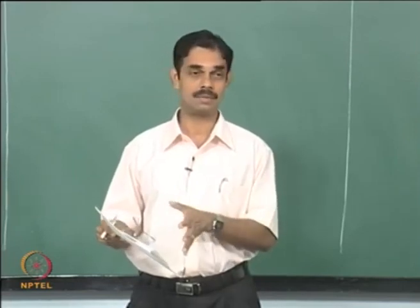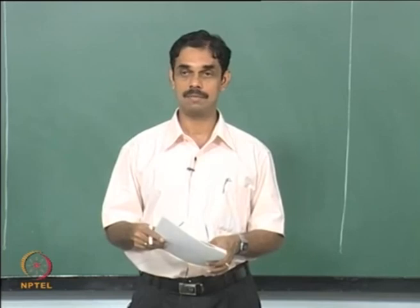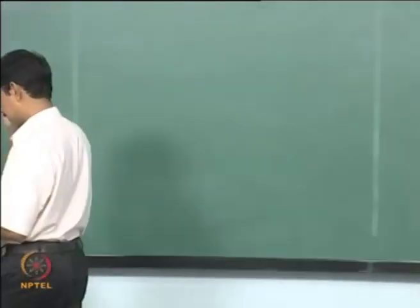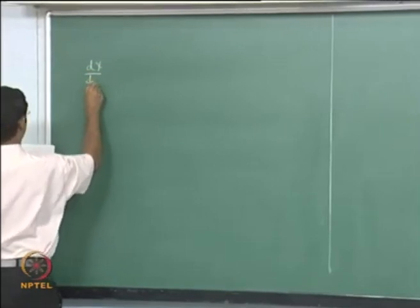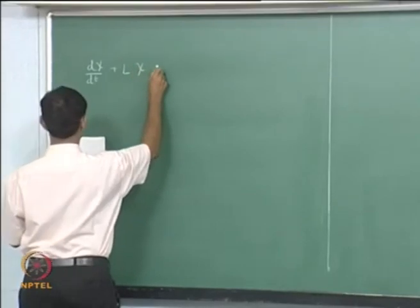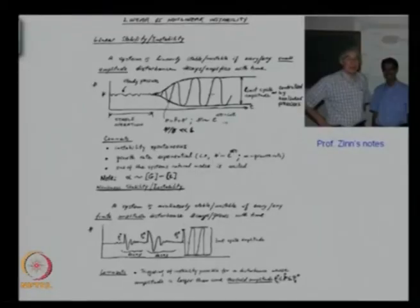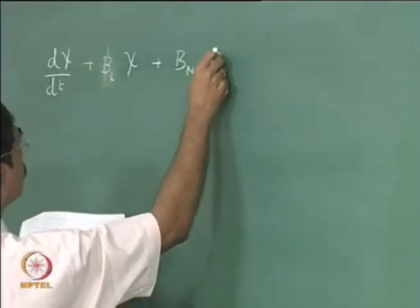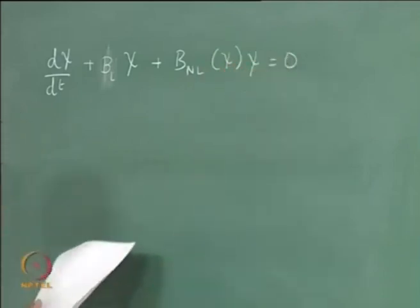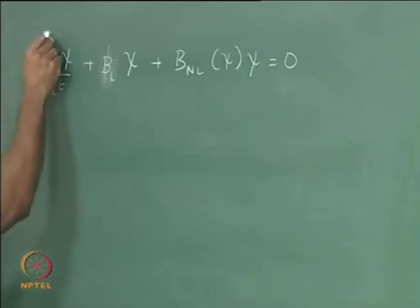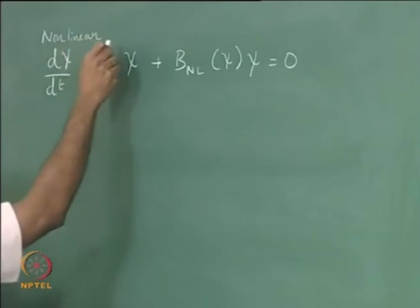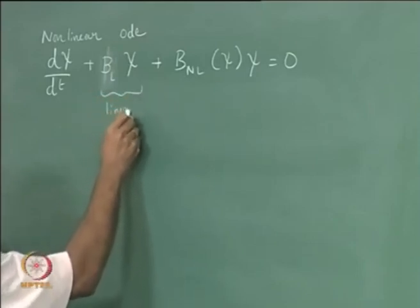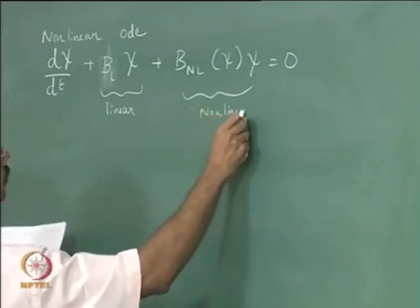For small time delays we can make the assumption that only the first term in tau is there. Then what we did is to rewrite the equations in such a way that we can use the dynamical systems approach. So what we had in the end was: d/dt plus L times chi plus BL. This is the set of nonlinear ODEs — this is the linear part and this is the non-linear part.